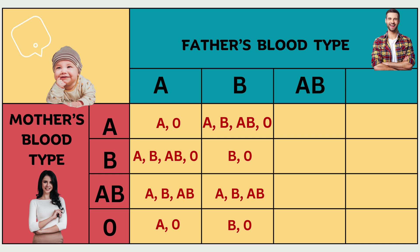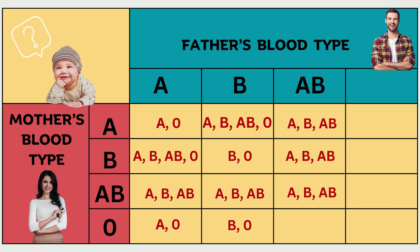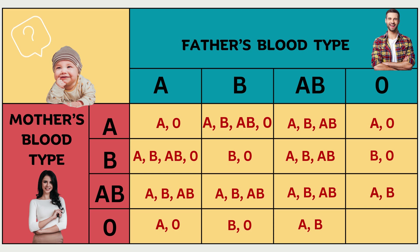If the father has blood type AB and the mother has blood type A, the child could be A, B, or AB. If the father has blood type AB and the mother has blood type B, the same combination is possible: A, B, or AB. The same applies if both parents have blood type AB — the child could still be A, B, or AB. If the mother is blood type O and the father is AB, the child could be A or B. When the father has blood type O and the mother has blood type A, the possible blood types for the child are A or O. If the father has blood type O and the mother has blood type B, the child could be O or B. If the father has blood type O and the mother has blood type AB, the child could be A or B. If both parents have blood type O, the only option is for the child to have the same blood type O.